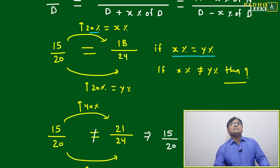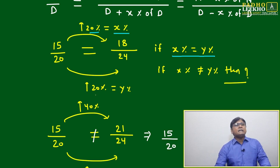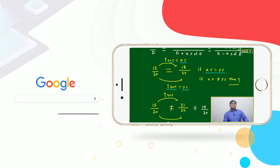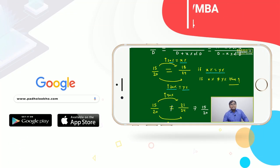Denominator, 20 to 24, that is also y percent, that is also 20 percent. Means x percent is equal to y percent. Then we will say 15 by 20 is equal to 18 by 24.